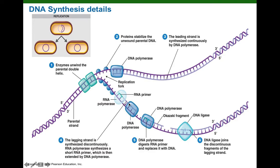Now if we watch what's going to happen, this DNA polymerase is eventually going to ram into the RNA primer in front of it. The problem is, when DNA polymerase 3 rams into that RNA primer, it can't get rid of it — it can't remove the RNA primer.